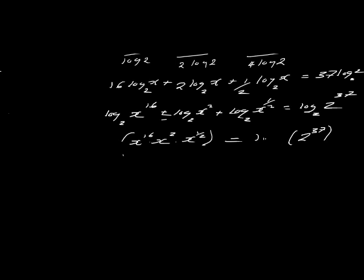When we ignore the logs and simplify further, on the left-hand side we have the same base with a multiplication sign — by the laws of indices, when you have the same base with a multiplication sign you add the powers. So x to power 16 times x to power 2 times x to power half is simply x to the power 16 plus 2 plus a half, which equals 18.5. So x raised to power 18.5 equals 2 to power 37.